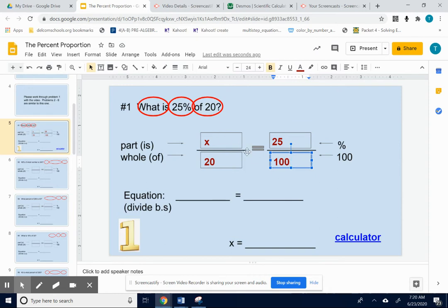Okay, so 100 times x. I'm just going to type that in as 100x. Is equal to whatever 20 times 25 is.